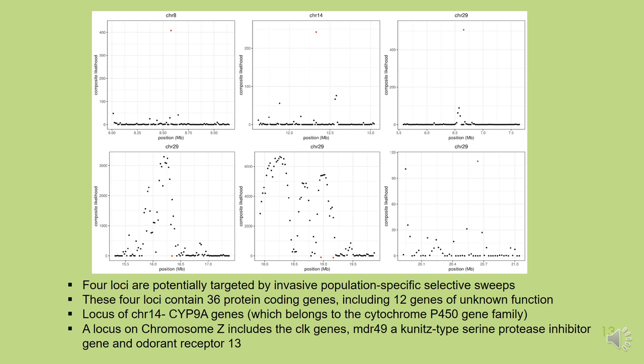For example, the locus on chromosome 14 corresponds to the CYP9A gene from the P450 gene family, which is a key player in the detoxification of xenobiotics such as insecticides. On another chromosome, a cuticle gene, which plays a key role in plant digestion, and also an odorant receptor gene, also known as a gustatory receptor, is found.